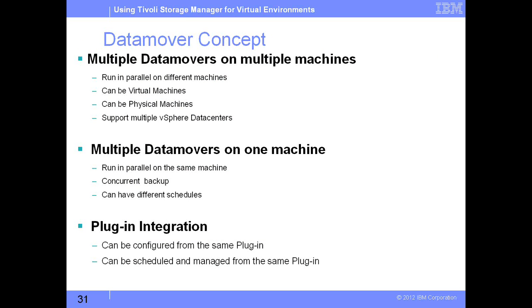Now, let's look at what exactly a data mover is and how it relates to a vStorage backup server. A vStorage backup server is a physical server where you install your client components — you have a backup-type client and you install the TSM client software components. On this server, you can have an instance of a data mover running using these client components, or you can have multiple instances of a data mover running on the same server. This data mover is essentially an instance of your TSM client which performs full VM backups or incremental VM backups from the VMware infrastructure to your TSM server.